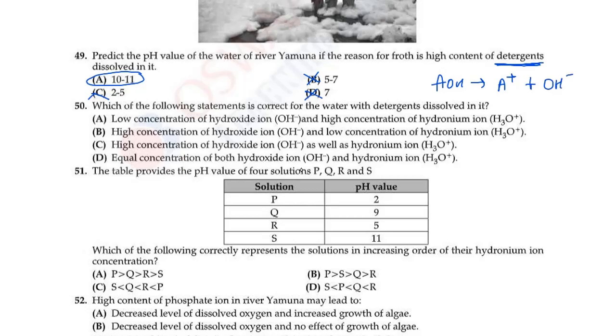Question 50: Which of the following statement is correct for water with detergents dissolved in it? When detergent dissolves in water, we get OH minus ions. Like if you have a detergent AOH, it ionizes to form A plus and OH minus. So OH minus concentration is very high, which means options A and D are cancelled because they show low or equal concentration. OH minus concentration is high and H3O plus concentration is low because that's part of acidic solutions.